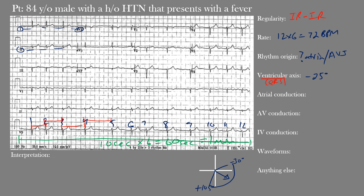Lead I sits at zero degrees (positive end) and lead AVF sits at positive 90 degrees — those are our first main reference leads. The normal axis region is between those boundaries. Right axis deviation lies in one region, left axis deviation in another, and extreme axis deviation — sometimes called no man's land — lies in its own quadrant.